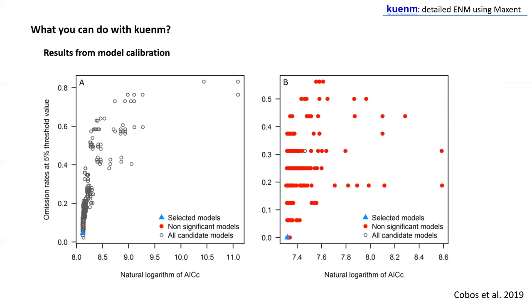After model calibration, you can obtain results like those presented here, and you can see the scenario can be very different. For one species there are a lot of non-significant models, and for the other there are none. Each species is different and has different occurrences, but also each species should be calibrated in an area relevant to the statistical process — related to what we call the M in the BAM diagram, the accessible areas for the species, because those are the relevant environments to which the species have had the chance to face or access.